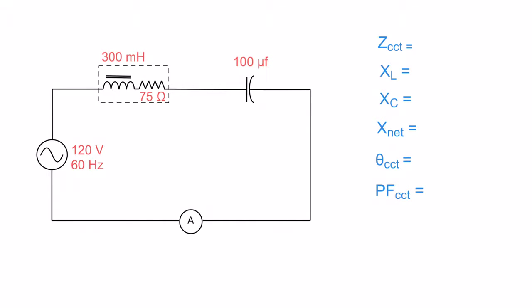We're going to be looking for the Z of the circuit, the total circuit impedance, total circuit opposition to current flow. We're going to talk about the inductive reactance, so we're going to change this mH into an XL, which is an ohmic value. We're going to take this and turn it into an XC, and then we're going to talk about X net.